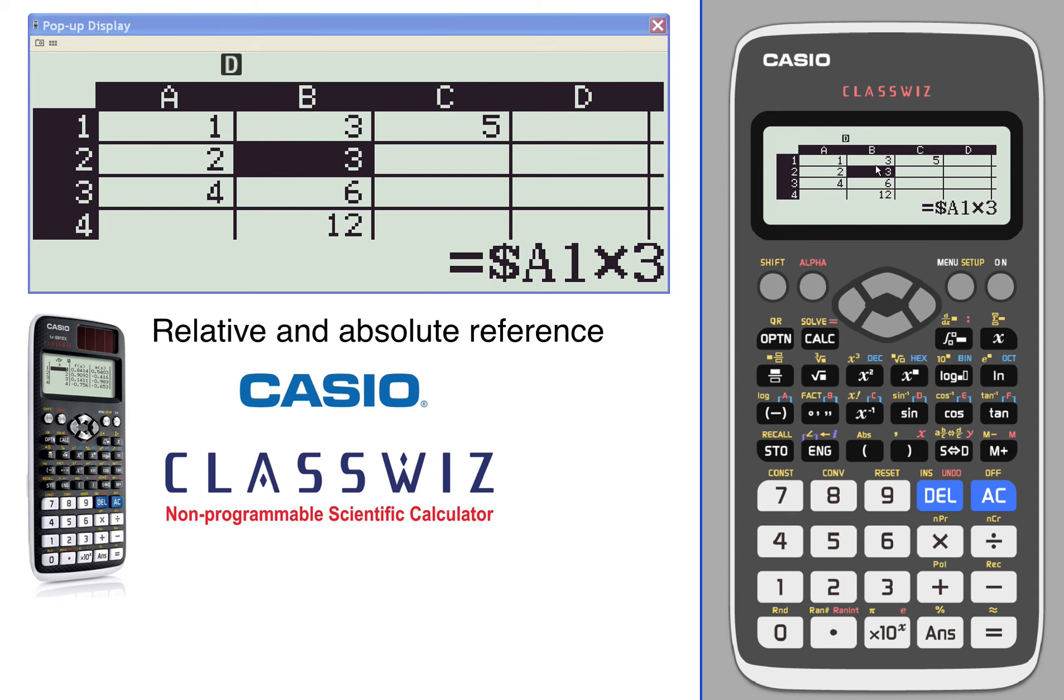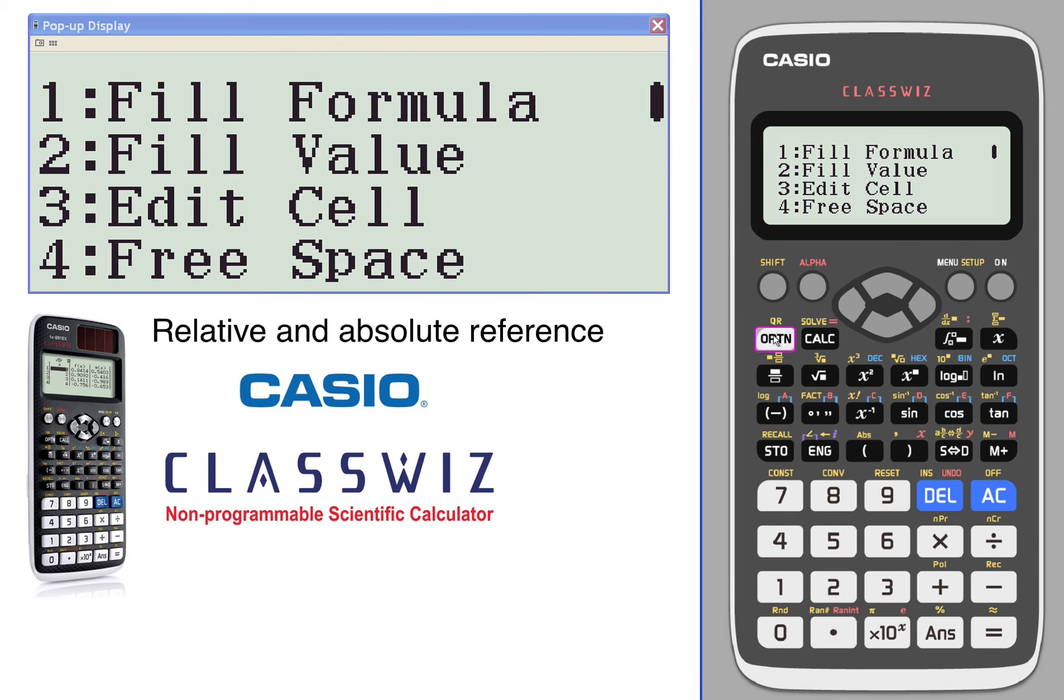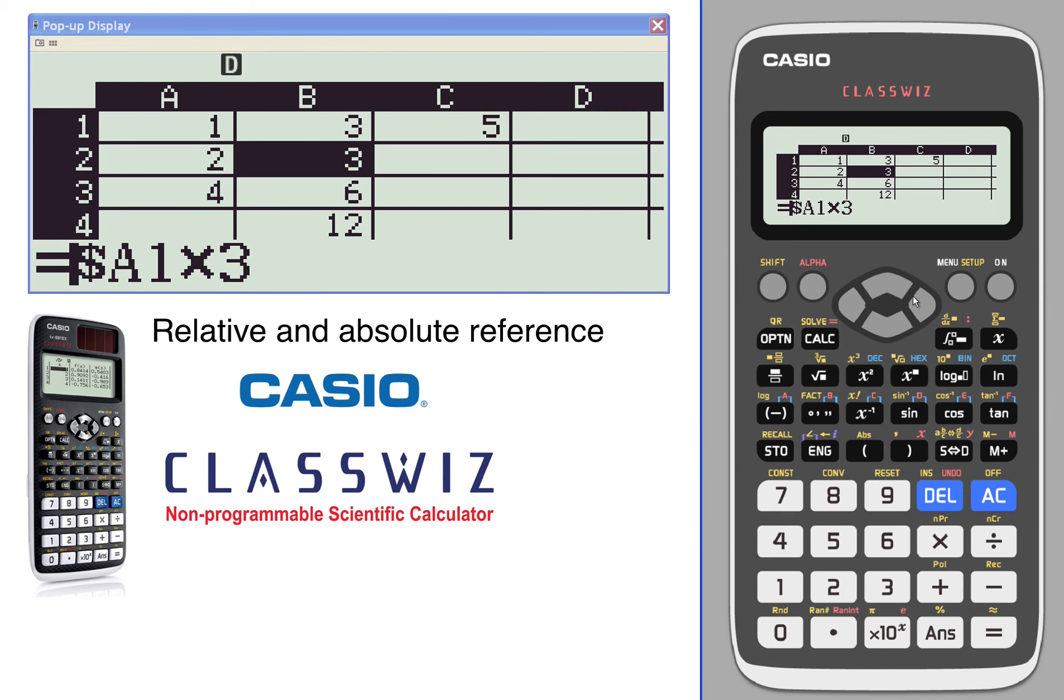Now we're gonna do the same thing but go in the other direction. We want to go relative rows. So for relative rows, we're gonna move the dollar sign over. We'll edit that cell, delete the dollar sign from the beginning, and put it in the middle to make it a relative row but absolute column, so it's gonna stay with A.